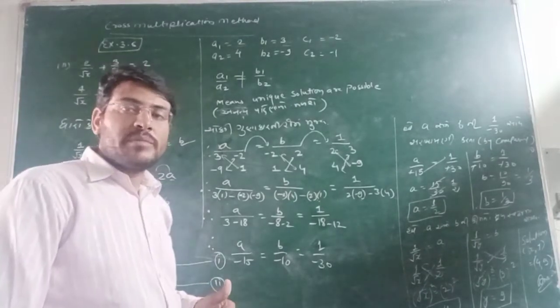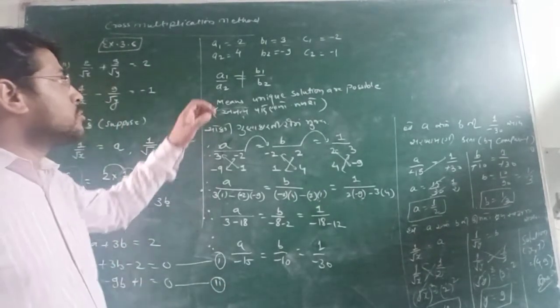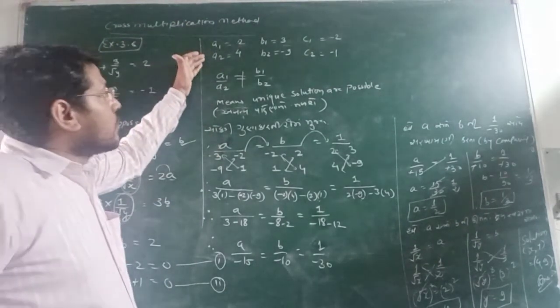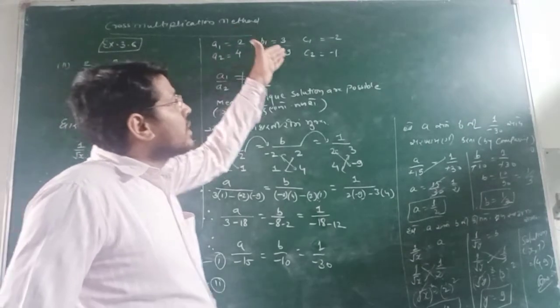Now, just before we discuss cross multiplication method, we all know about the values we need: a1, a2, b1, b2, c1, c2. So, a1, a2 is 2 upon 4, b1, b2 is 3 upon minus 9, c1, c2 is minus 2 upon 1. When we check out whether they have unique solutions or not,